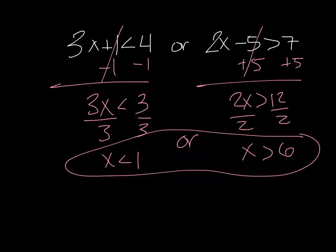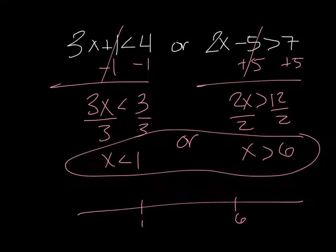I've got all of that going on, and then I have to graph them both in the same one. I put my numbers where they belong: X is greater than six, X is less than one. So I get this graph where they're going in opposite directions.